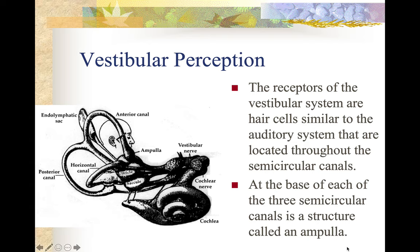An ampulla is Latin for a receptacle with a rounded bottom. You might wonder why you would make a bottle you couldn't set down on a flat surface — the reason is they would have a stand for it. This was used for wine: the solid material in the wine would settle at the pointed bottom end so it wouldn't get into the wine when poured.